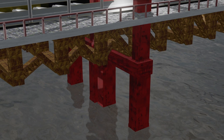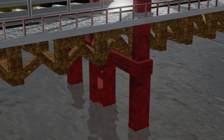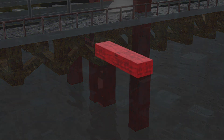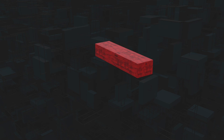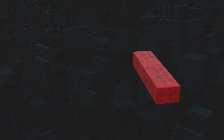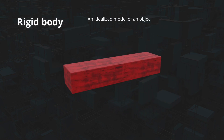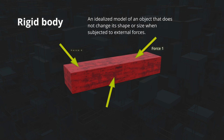In this video, we will develop part of the theory of forces, starting by defining what a rigid body is. A rigid body is an idealized model of an object that does not change its shape or size when subjected to external forces. It's like a frozen snapshot of an object, which allows us to analyze its behavior under various load conditions.